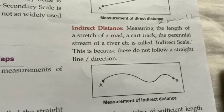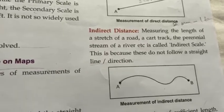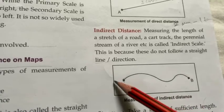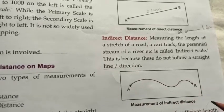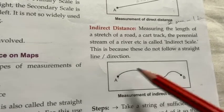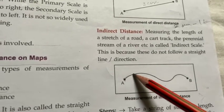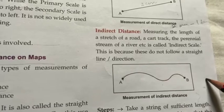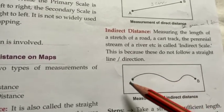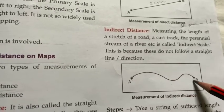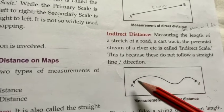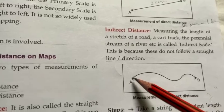How can we measure the indirect distance? For example, this is point A and this is point B. The distance between them is a curved line. What do we use? We use a thread. We place the thread along the curved line from A to B and mark both ends.